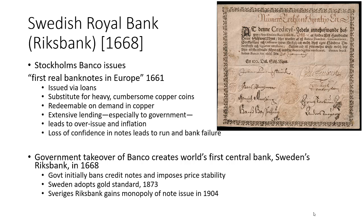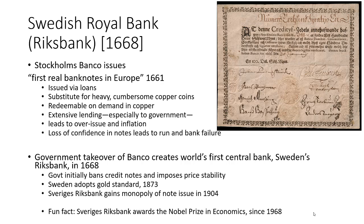A monopoly of note issue is a common theme, though it took surprisingly long for the Swedish Royal Bank compared to other central banks that usually got their monopoly of banknote issue very early on. An interesting fact about the Swedish Royal Bank: they are the entity that awards the Nobel Prize in Economics, which started in 1968. The Nobel Prizes in chemistry, physics, medicine, and peace started back in the early 1900s and were created by Alfred Nobel himself. But the Economics prize, which is not part of the original Nobel Prizes, was launched by the Swedish Royal Bank.